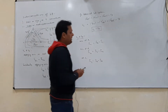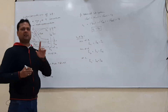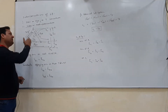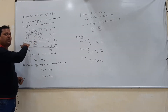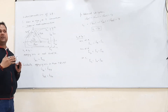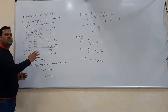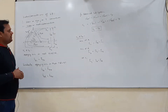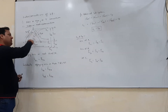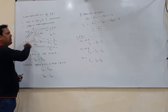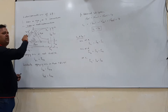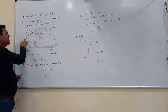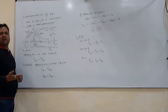This is a three-phase balanced system, meaning the magnitudes of voltages across phases R, Y, and B are the same, differing only in phase angle. IR has 0 degrees, IY has minus 120 degrees, and IB has minus 240 degrees (or plus 120 degrees). The magnitude of current across all three phases is also the same.